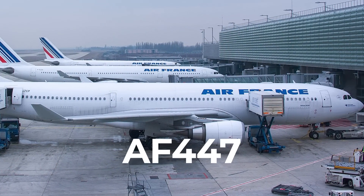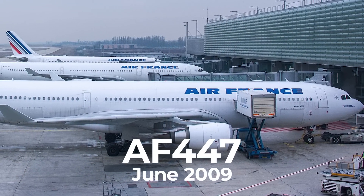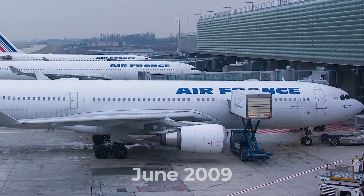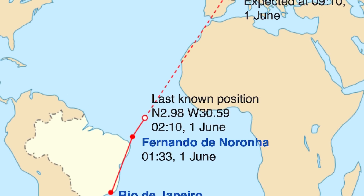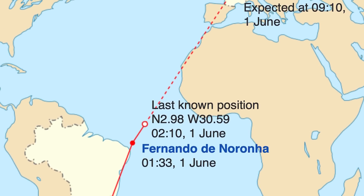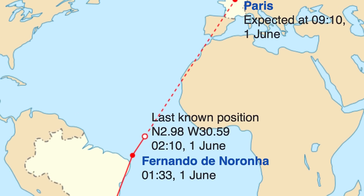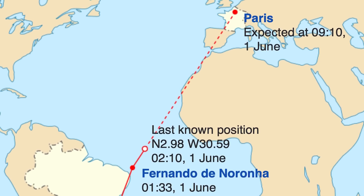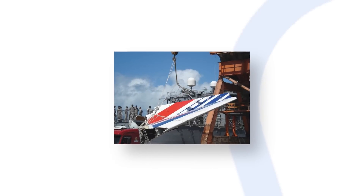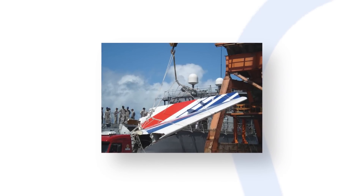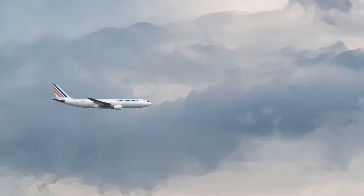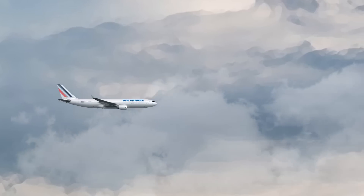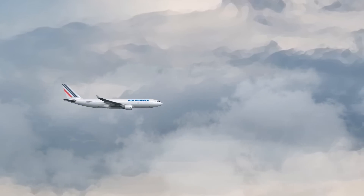Air France Flight 447 crashed in the Atlantic Ocean in June 2009 due to a high-altitude stall while flying from Rio de Janeiro to Paris. All 228 passengers and crew perished in the tragic accident, which was the deadliest involving both Air France and the Airbus A330. The crash has been linked to the coffin corner by publications such as Scientific American.